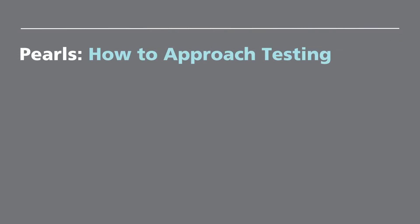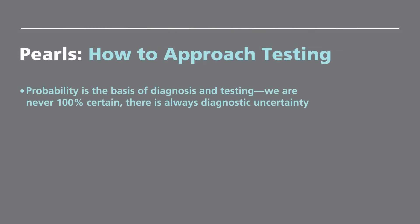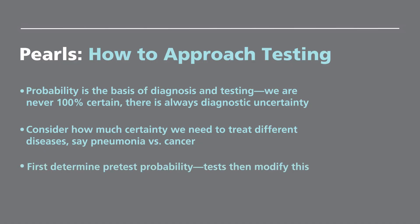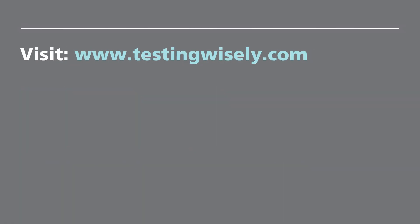The pearls to remember when approaching medical testing: probability is the basis of diagnosis and testing — we are never 100% certain, there is always diagnostic uncertainty. Consider how much certainty we need to treat different diseases, such as pneumonia versus cancer. First, determine pretest probability; tests then modify this. To learn more, visit our website, which catalogues test performance numbers from the scientific literature for sensitivity, specificity, and probabilities displayed in a more understandable fashion — doing the math for you.